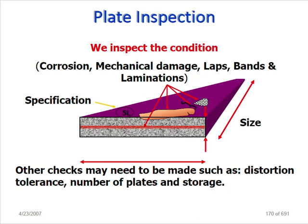Plate inspection - we inspect the condition for corrosion, mechanical damage, laps, bands, and lamination. You have to check the specification, condition, laps, any bands, and lamination. Check the size received, whether it meets the requirement, and other checks such as tolerance, number of plates, and storage.